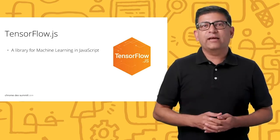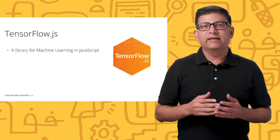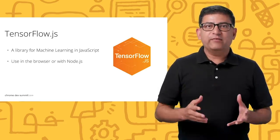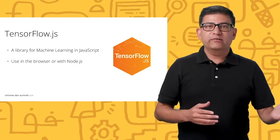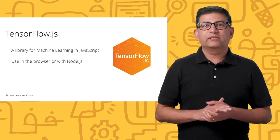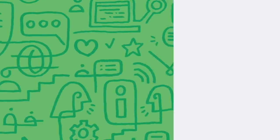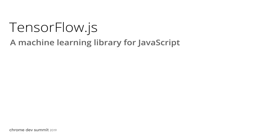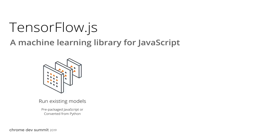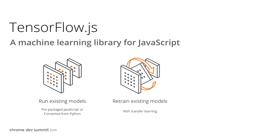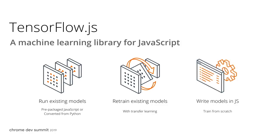TensorFlow.js is an open source library for machine learning in JavaScript. It runs in a web browser and can also be used server-side and on many other platforms that support JavaScript. You can use TensorFlow JavaScript in one of three different ways: you can run a pre-trained machine learning model in your application, you can customize a pre-trained model by retraining it on your own data, or you can use the lower level Ops API to write a new model from scratch directly in JavaScript.